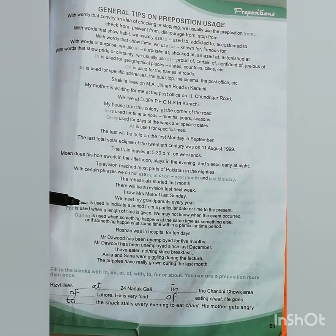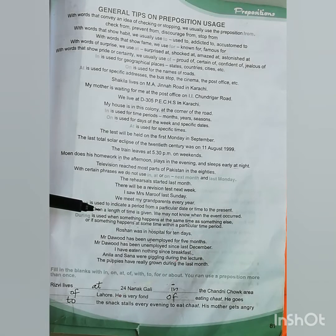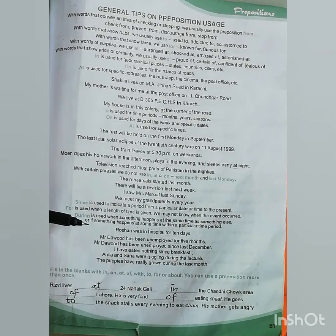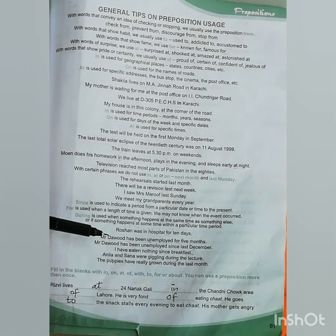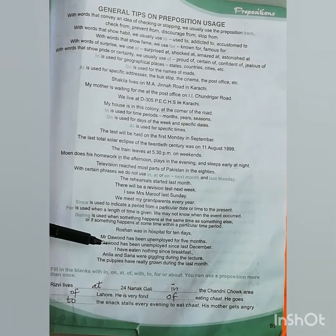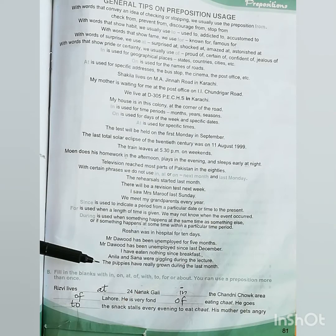'Since' is used to indicate a period from a particular date or time to the present. 'For' is used when the length of time is given and we may not know when the event occurred — we are unsure about the exact date or moment. 'During' is used when something happens at the same time as something else, or within a particular time period. For example: Roshan was in hospital for 10 days. Mr. Dawood has been unemployed for 5 months. Mr. Dawood has been unemployed since last December — we are sure about it, that's why we use 'since'. I have eaten nothing since breakfast. Anila and Sana were giggling during the lecture. The puppies have really grown during the last month.